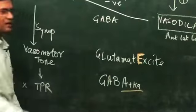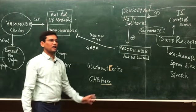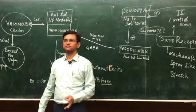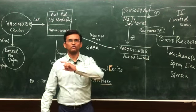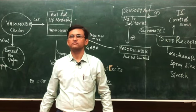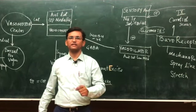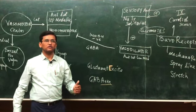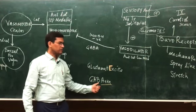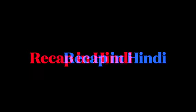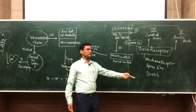Glutamate is an excitatory neurotransmitter — it excites — and this is true across the entire CNS. GABA is an inhibitory neurotransmitter. These are the two key neurotransmitters mediating the baroreceptor reflex pathway.